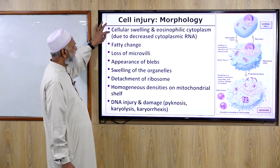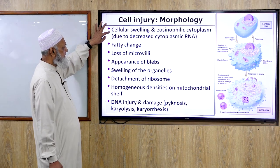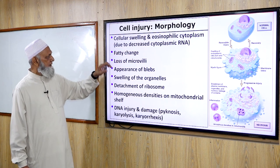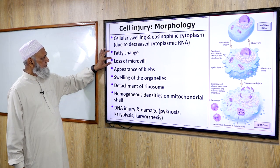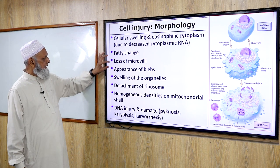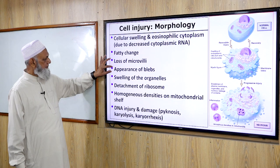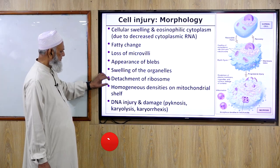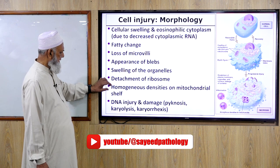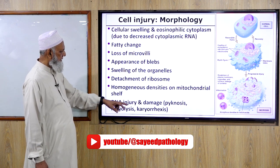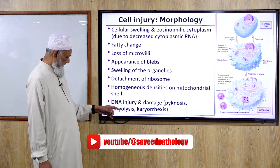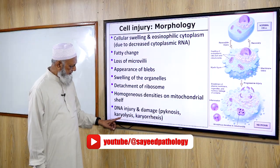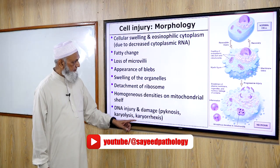Morphology of reversible cell injury: cellular swelling and pale cytoplasm due to decreased cytoplasmic RNA, fatty change, loss of microvilli, appearance of blebs, swelling of organelles, detachment of ribosomes, homogenous densities in the mitochondrial matrix. Nuclear injury appears in the form of pyknosis, karyolysis, and karyorexis.